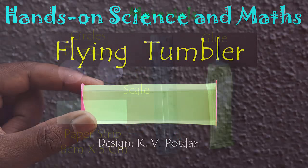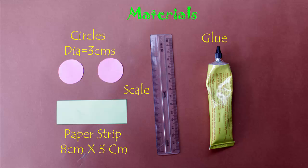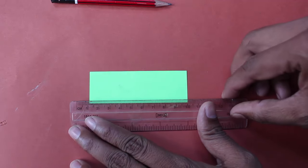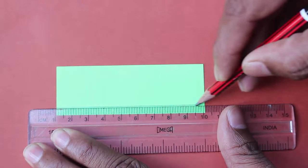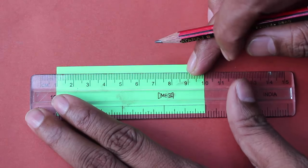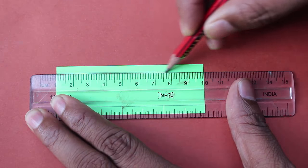This paper tumbler is an amazing flying toy. All you need to make it is a paper strip nine centimeters long and three centimeters wide, and two circles of paper. Take the strip and mark lines along the two long edges.